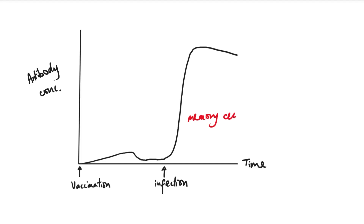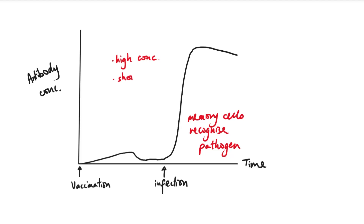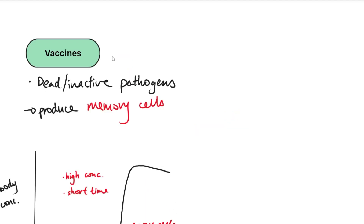When the real infection occurs, because the memory cells are there they immediately bind to the antigens, recognizing the pathogen and producing high concentrations of antibodies in a very short amount of time. The antibodies also stay in the bloodstream longer. You need to mention two things: it's a much higher concentration than before, and it happens in a shorter amount of time.